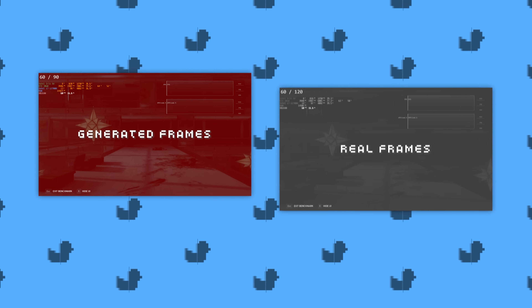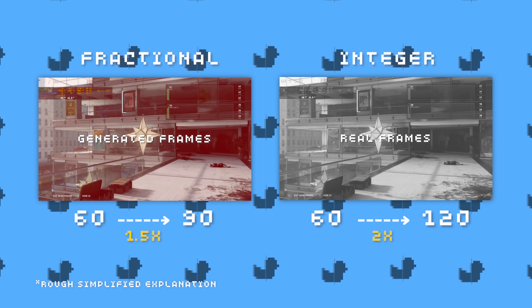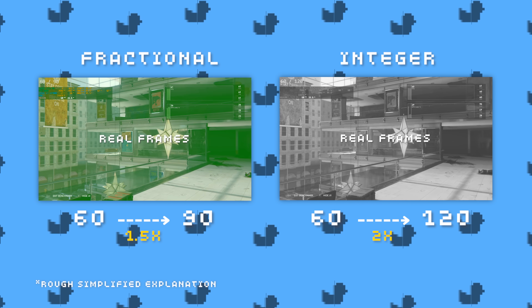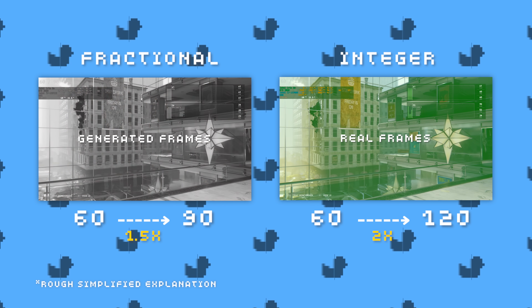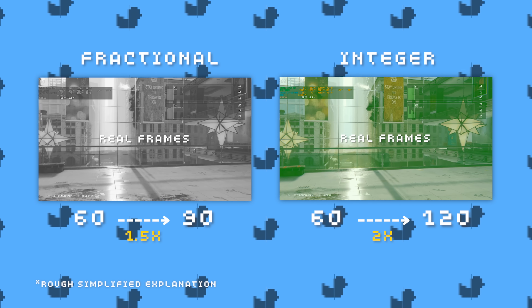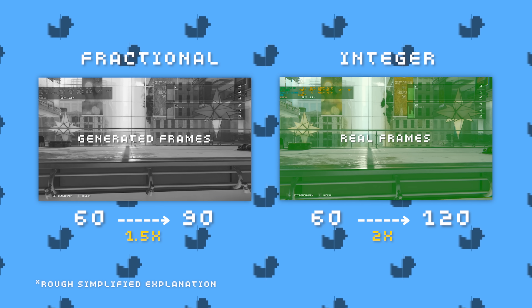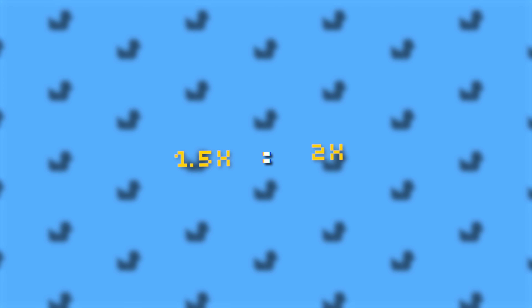With fractional multipliers, the frame pacing algorithm relies on displaying and producing more generated frames rather than real frames to hit the target FPS. Meanwhile, integer multipliers like times 2 or times 3 prioritize displaying real frames more frequently. So even with multipliers like 1.5x or 1.8x, the performance cost will be about the same as 2x FG in fixed mode, as you can see from this comparison.